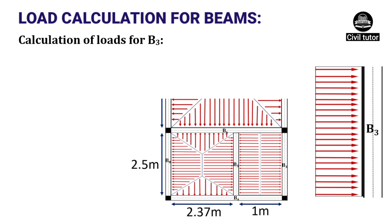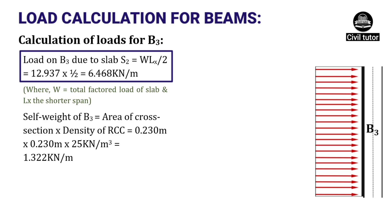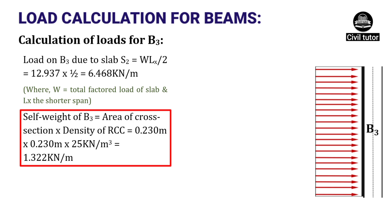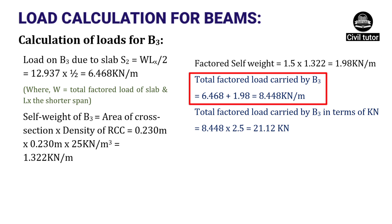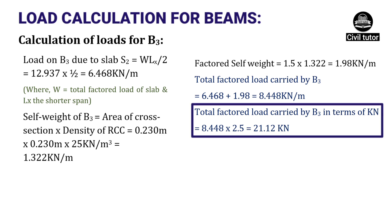Since S2 is a one-way slab, its load is carried by B3 and B5 equally. The load on B3 due to slab S2 = W·Lx/2, where W = 12.937 kN/m² and Lx = 1 m (shorter span of S2). Substituting, load on B3 = 6.468 kN/m. Self weight = 1.322 kN/m and factored self weight = 1.98 kN/m. Total factored load on B3 = 8.448 kN/m. In kN: 8.448 × 2.5 m = 21.12 kN.